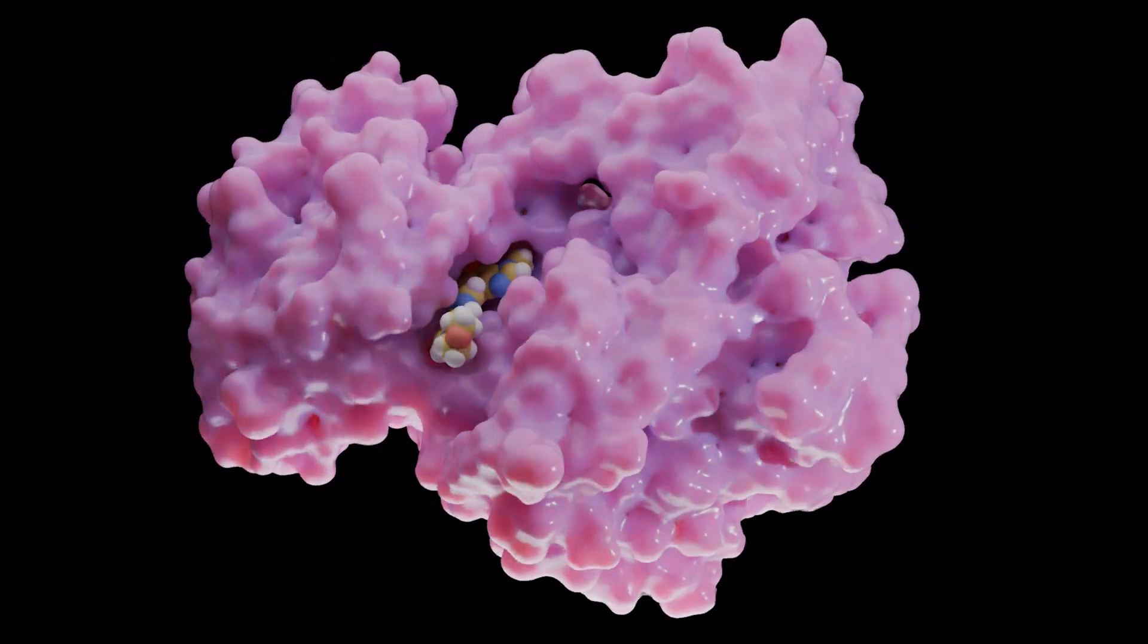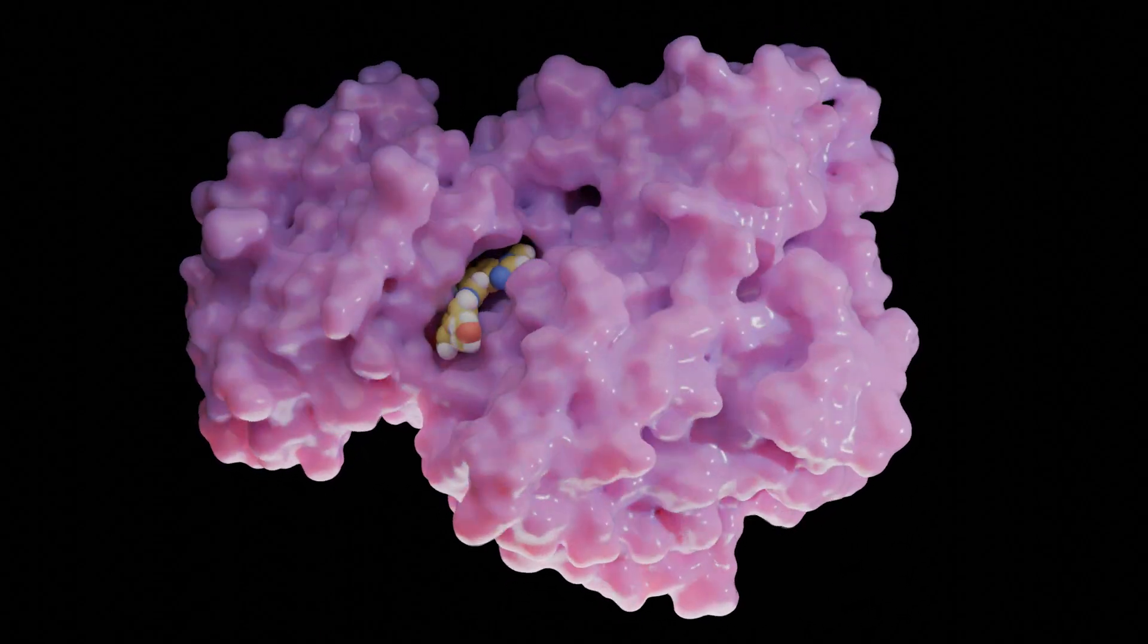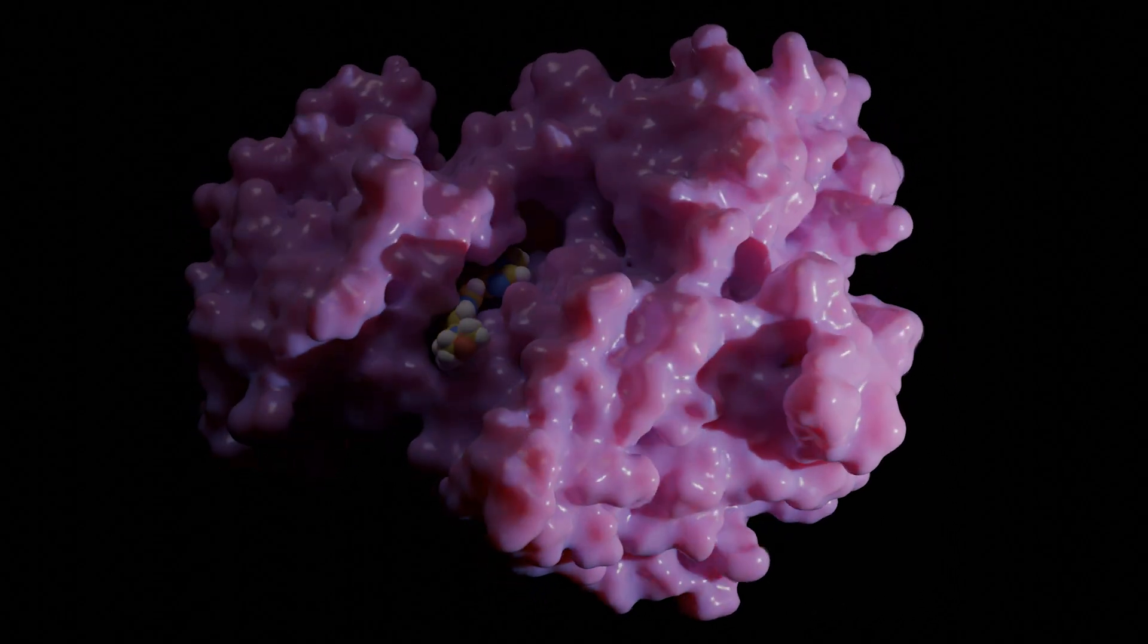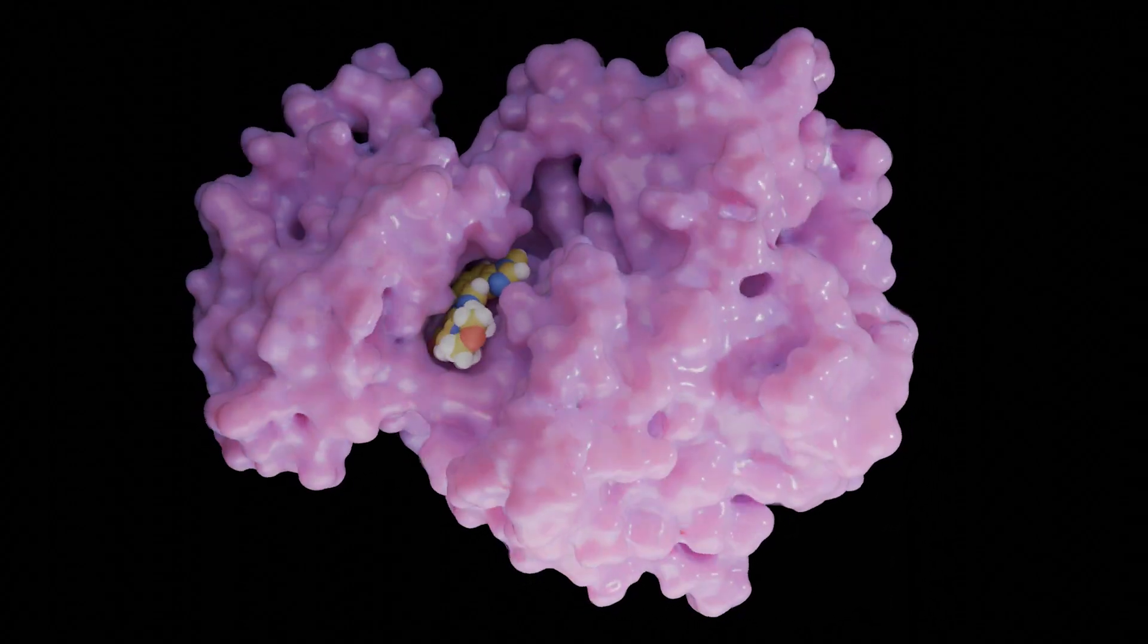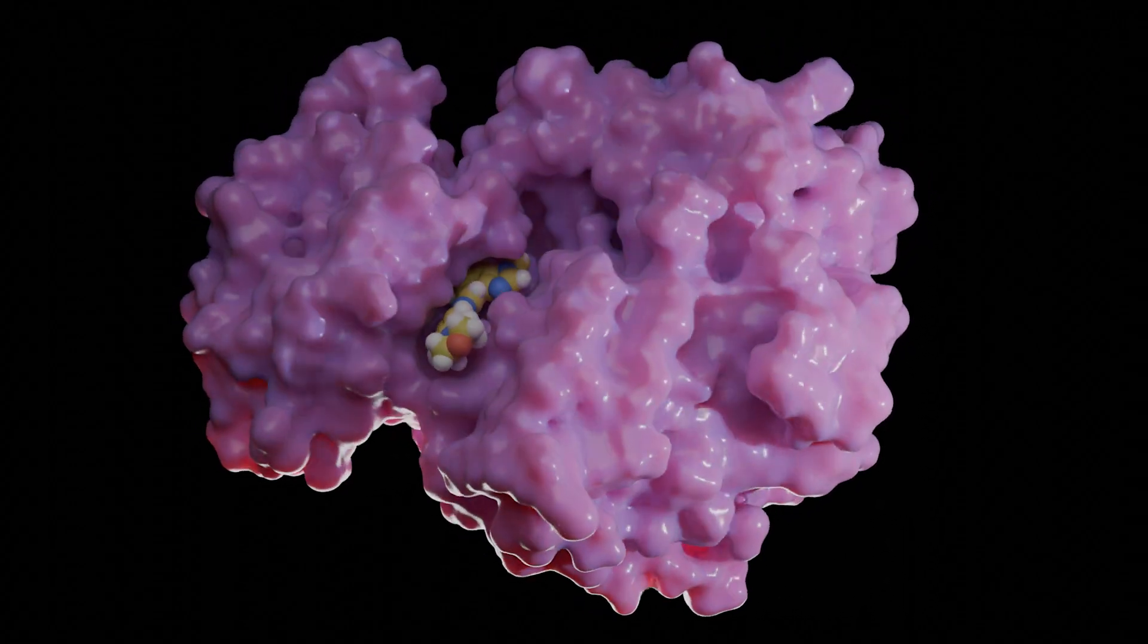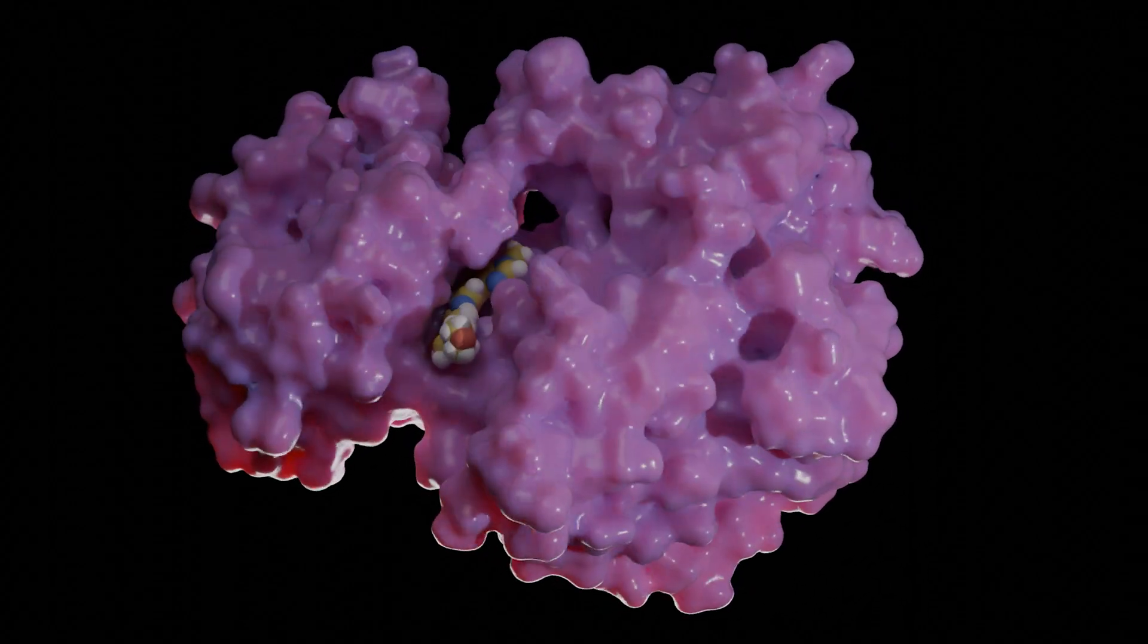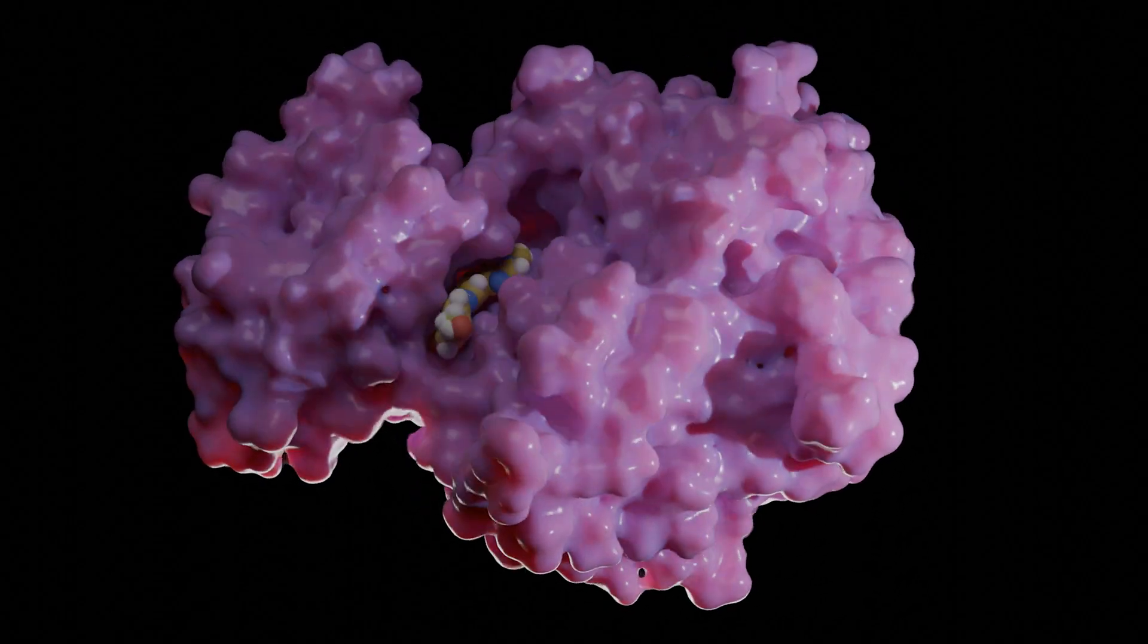Instead of just trial and error in the lab, we can test ideas on the computer. We can see, before synthesizing anything, whether a proposed tweak might make the drug bind tighter or more selectively. It's part of a modern approach called structure-based drug design, using the protein's 3D structure and even its motions to guide how we shape our drug. It's a bit like peeking inside the lock and then crafting the key, rather than guessing blindly. In our HPK1 story, these insights are incredibly valuable. They tell us which interactions to keep and which ones we might improve. And importantly, they highlight unique features of HPK1's pocket that we can target.